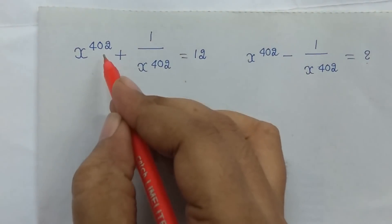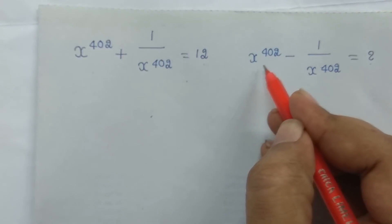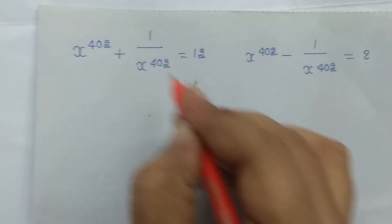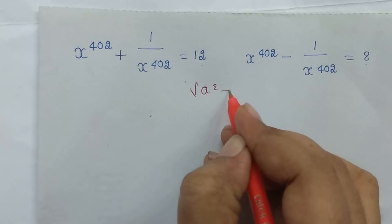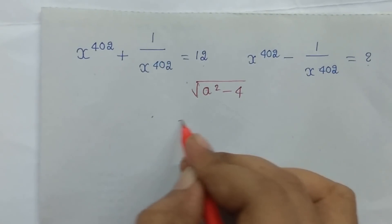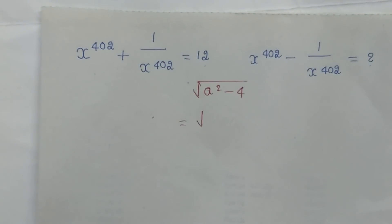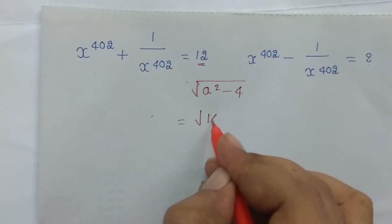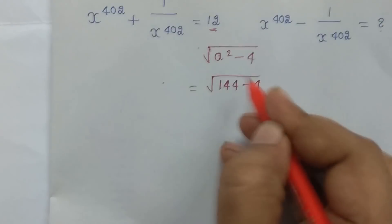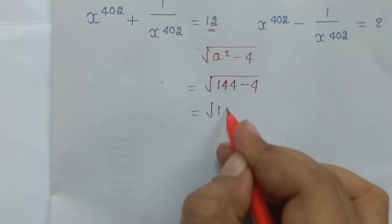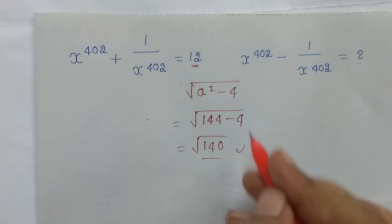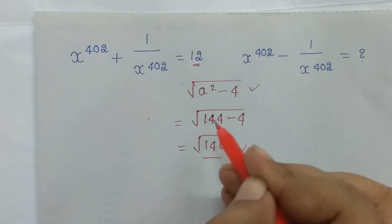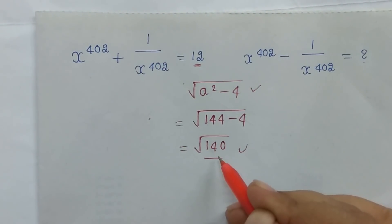Sum: x^(4n2) + 1/x^(4n2) is equal to 12. Find x^(4n2) - 1/x^(4n2). Apply the direct shortcut: here it's plus, so the formula gives minus — root(a² - 4). a² is 12 squared which is 144, so root(144 - 4) = root(140). That's the answer.